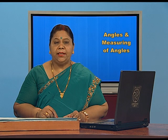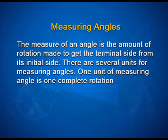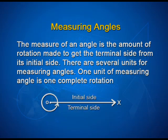Now let us study about how to measure these angles. The measure of an angle is the amount of rotation made to get the terminal side from its initial side. There are several units for measuring angles. One unit of measuring an angle is one complete rotation — as you can see in the figure, one complete rotation is considered as one unit.